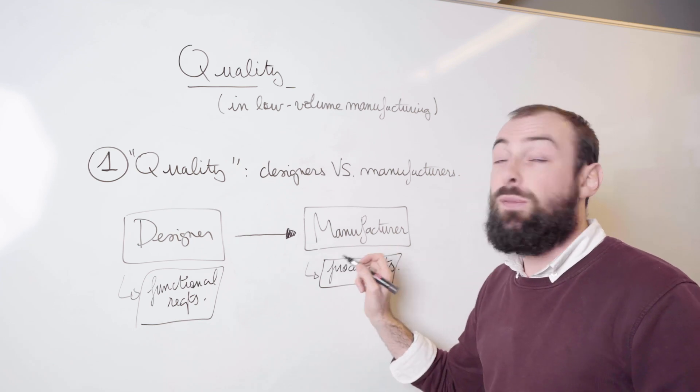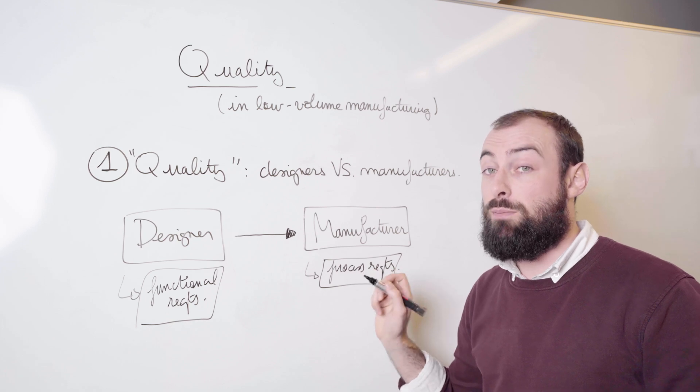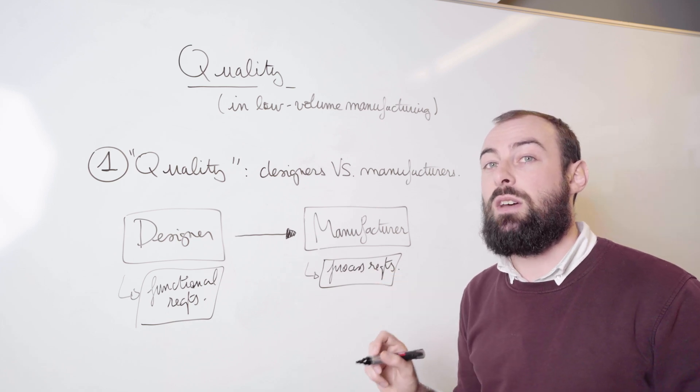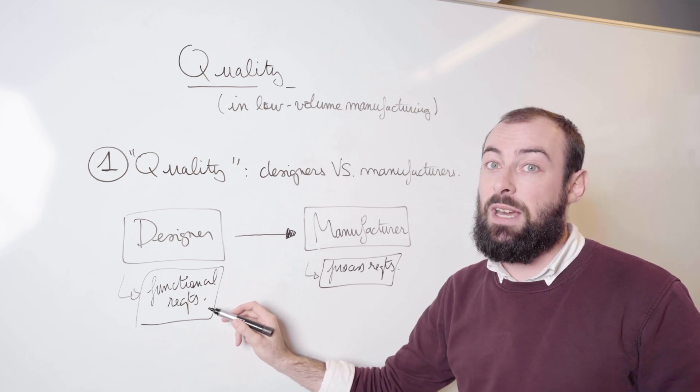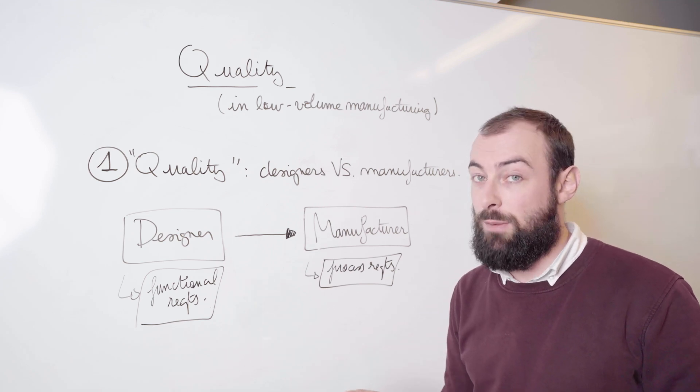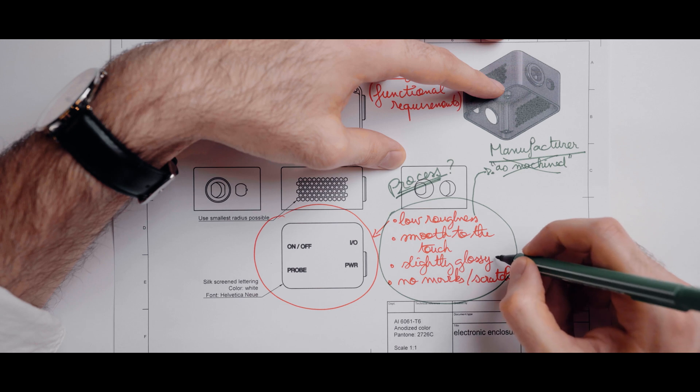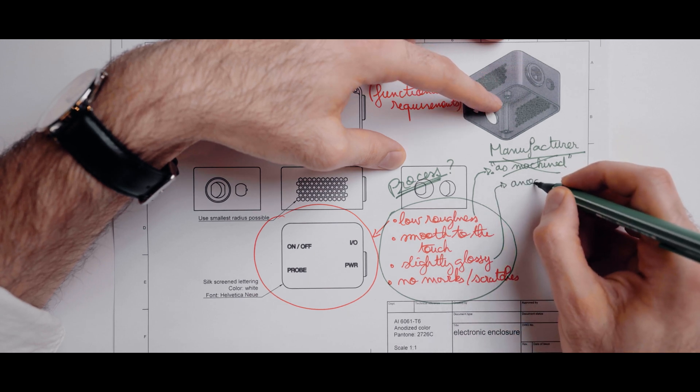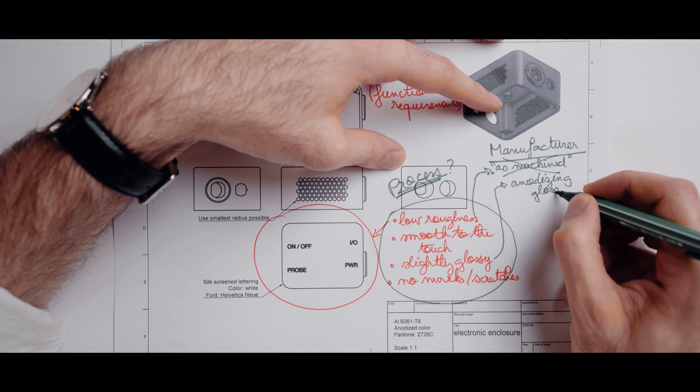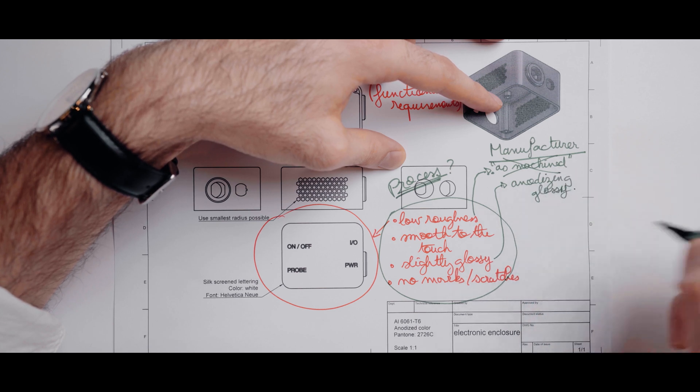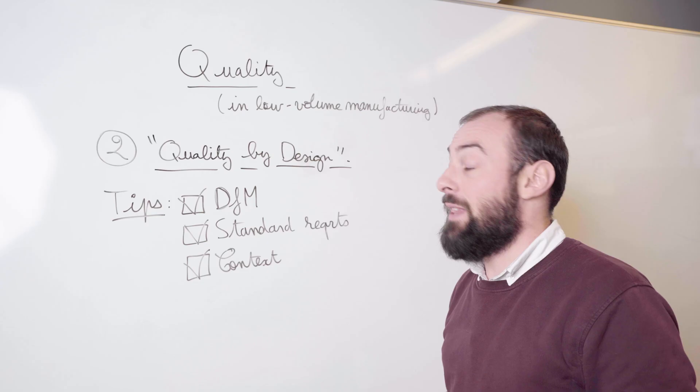A manufacturer will know how to satisfy the functional requirements in several different ways oftentimes. If you don't tell the manufacturer which process and which technology they have to choose to satisfy the functional requirements, then they have a judgment call to make. The more the manufacturer has the process requirements written down for them, the less trouble they will have in making sure that your functional requirements as a designer are met at the end of the day.